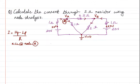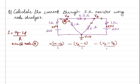At node A, this is incoming current, so it is positive. The next is outgoing current, so it is negative. This one is also outgoing current, so it is also negative. So the equation is: (20 minus VA) divided by 1, minus VA divided by 1, minus (VA minus VB) divided by 0.5, equals 0.